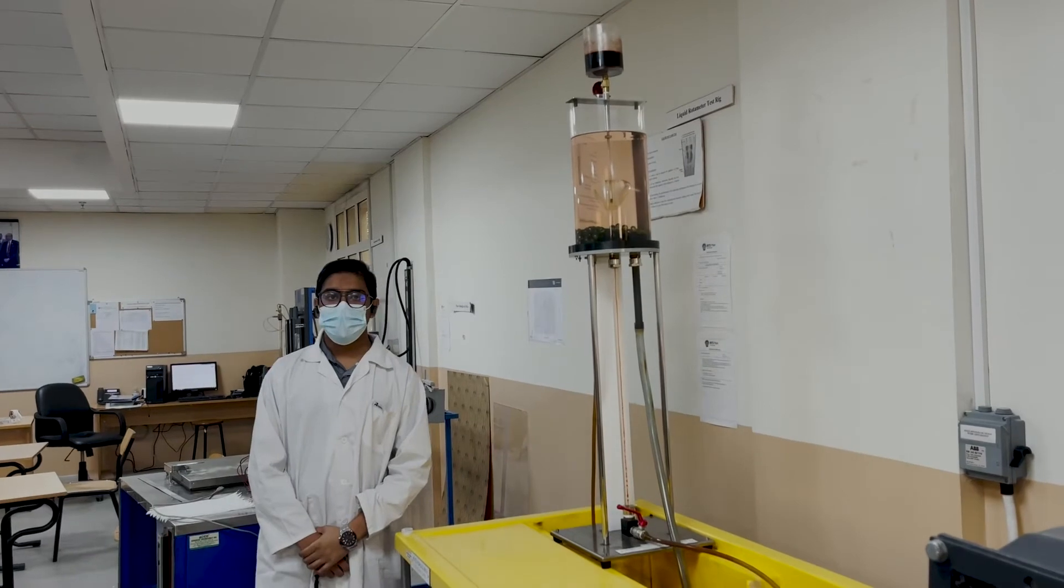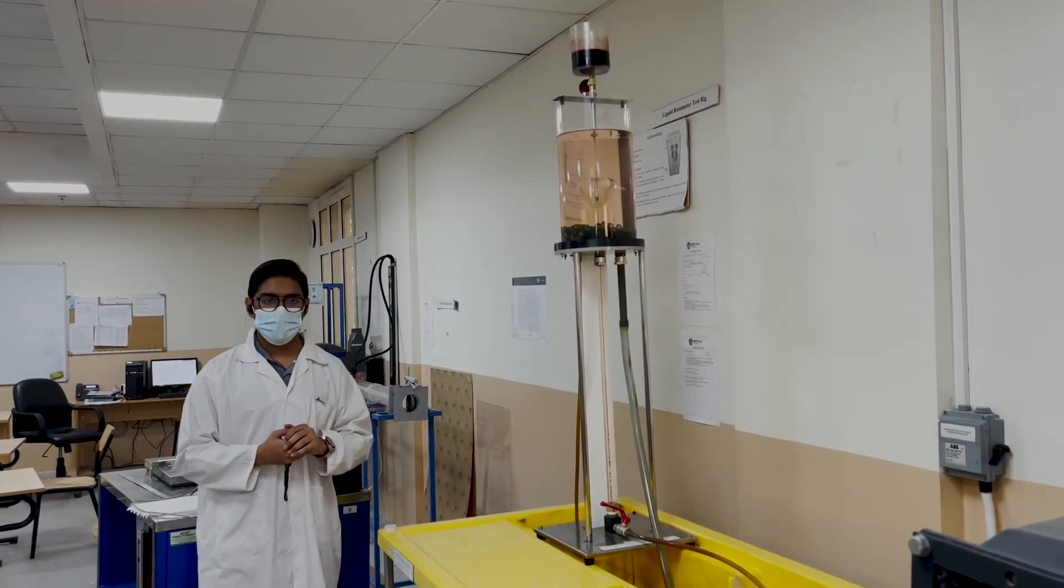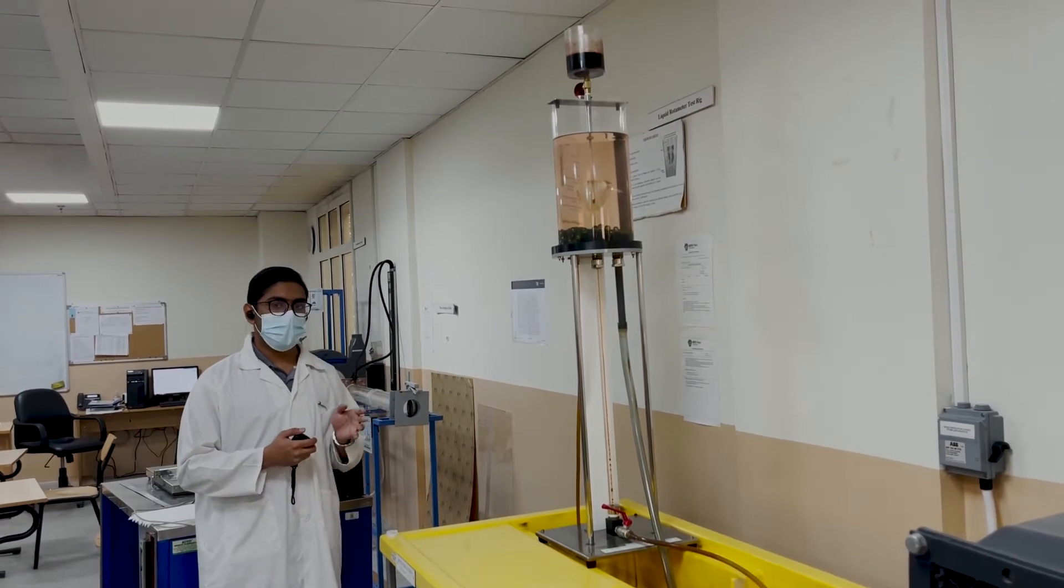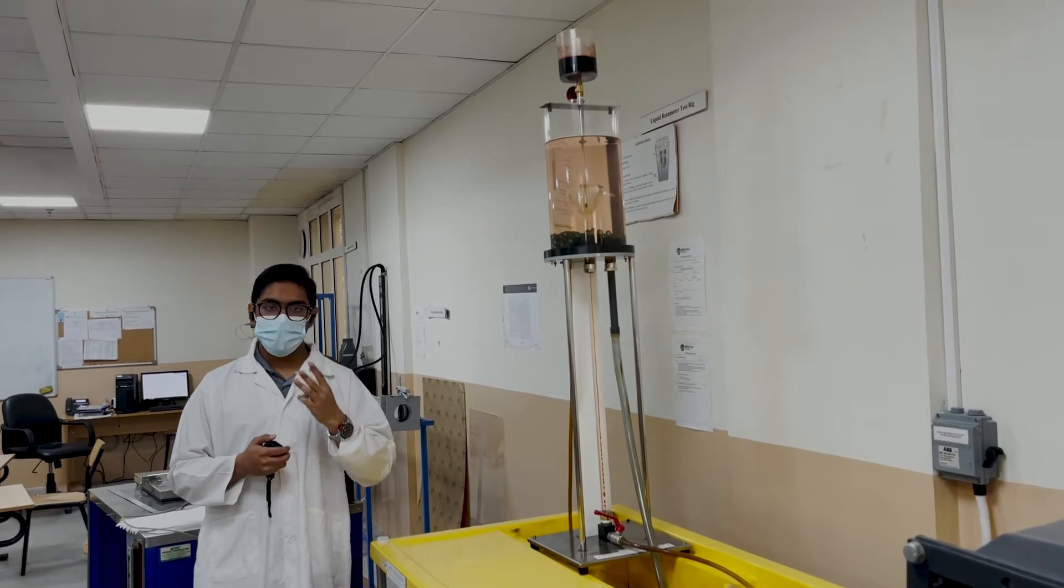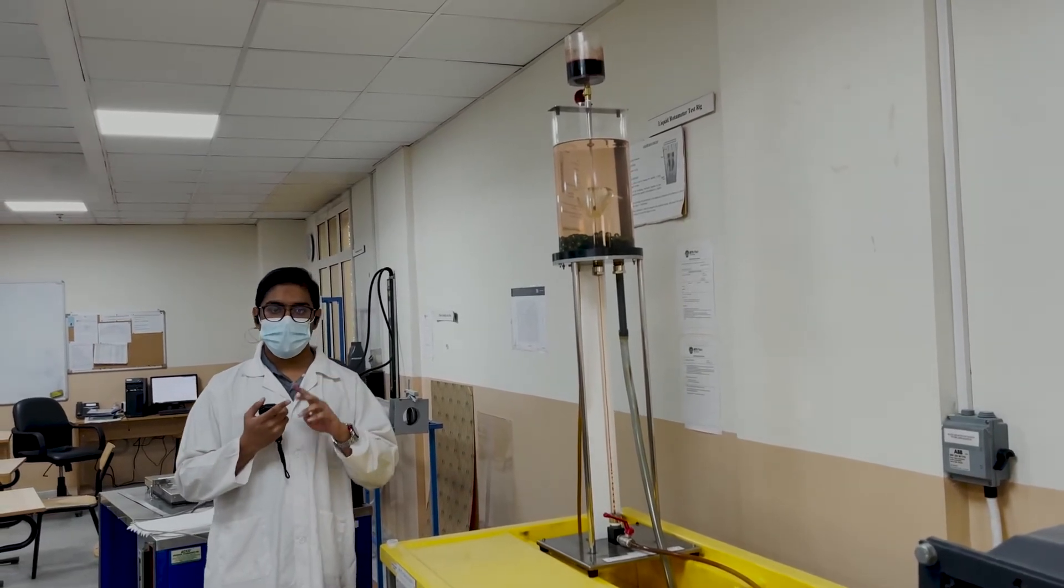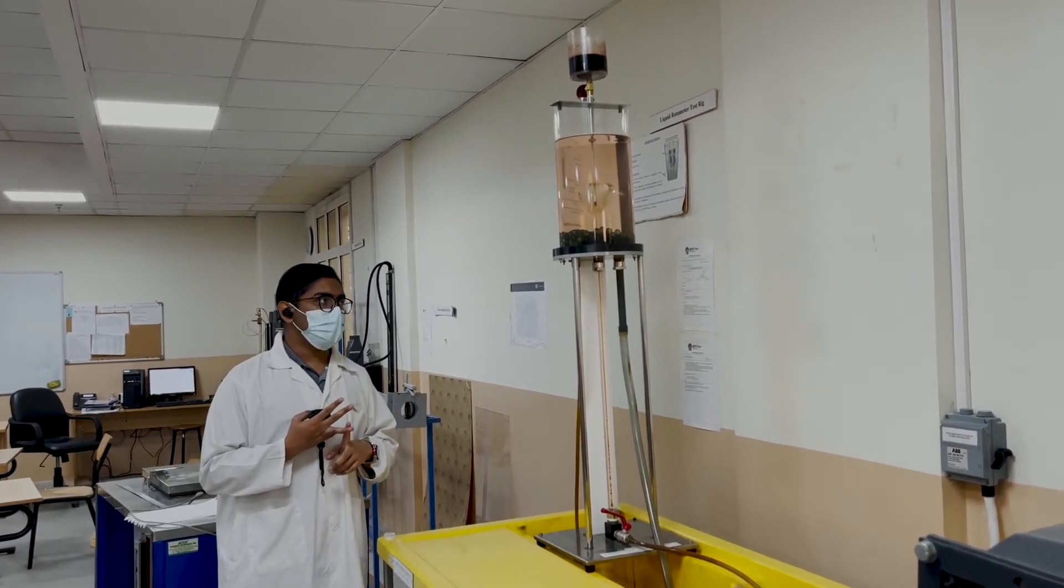Let us now see a demonstration of the experiment. Okay, hello everyone. This apparatus over here is used for measuring the Reynolds number. How is this experiment performed? I'll give you step by step. Basically, we are going to see three different flow rates. We are going to measure the laminar flow, turbulent flow, and transitional flow.